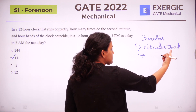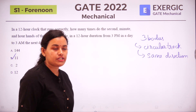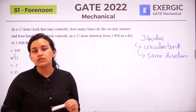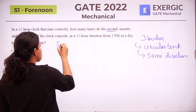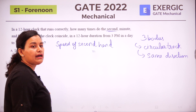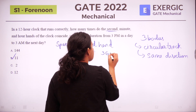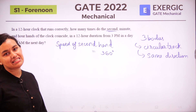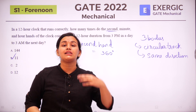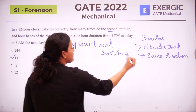When solving circular track problems, we first need to find the speeds of the individual bodies. Speed is measured in degrees per minute, since the total distance covered is 360 degrees. The second hand covers 360 degrees in one minute, so the speed of the second hand is 360 degrees per minute.